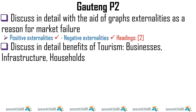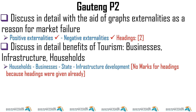For tourism benefits, we have four possible headings: households, businesses, state, and infrastructure development. But in Gauteng, they gave you three — businesses, infrastructure, and households — so you wouldn't earn marks for those headings. Be careful: since they gave you the headings, state was not included, so don't discuss it. For the externalities essay, knowing positive and negative externalities each earns a mark. If the question had said 'state intervention as a consequence of market failure,' you'd also draw minimum wage, minimum prices, and maximum prices graphs.